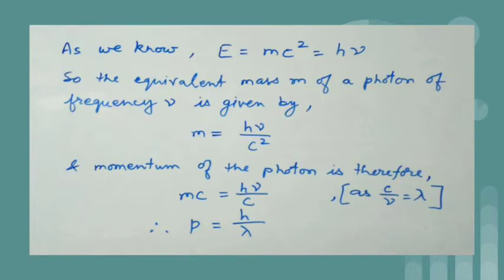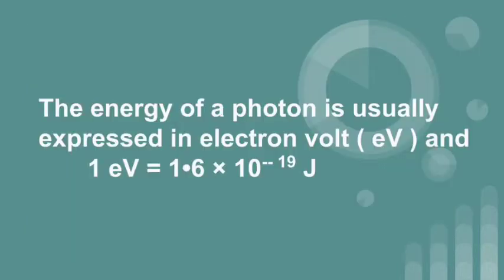The energy of a photon is usually expressed in electron volt and 1 electron volt is equal to 1.6 into 10 to the power minus 19 joule.